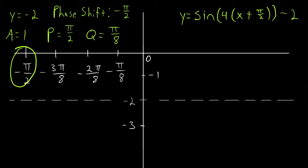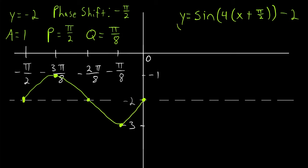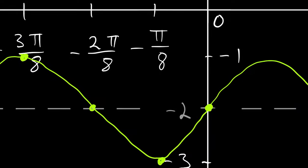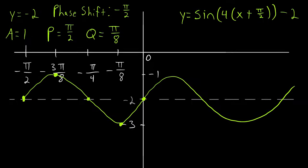This is a sine function, so at the phase shift it starts at the midline y equals negative 2. Its amplitude is positive, so it goes up to its peak at negative 1, comes back down to the midline, goes down to its lowest point at negative 3, and then returns to the midline at the end of the period. That's our beautiful sine function with all those transformations. Lastly, reduce your fractions — negative 2 pi over 8 reduces to negative pi over 4.